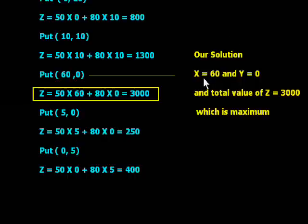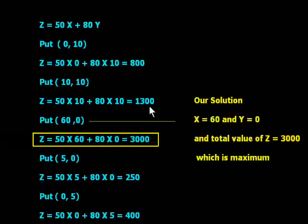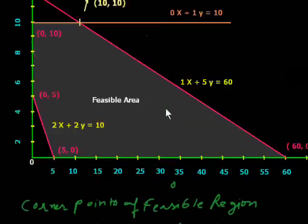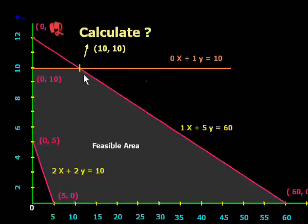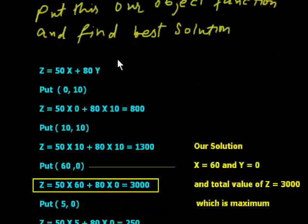Now our solution is x will be 60 and y will be 0, and total value of Z will be 3000 which is maximum from other solutions. 3000 more than 1300, 3000 more than 800, 3000 more than 250, 3000 more than 400. One more important thing you must know, you have to find this area. Just create the equation of 1x plus 5y equals 60 and below this you can put 0x plus 1y equals 10. After solving this you can calculate this value. Thank you very much.